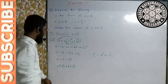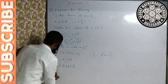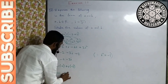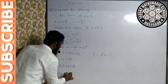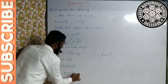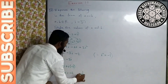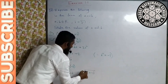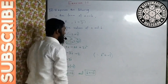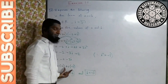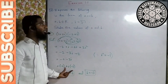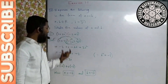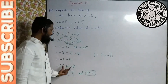Yahan compare karke ham a nikalte hain: a ki value hai minus 4, aur b imaginary part hai minus 3. Therefore a is equal to minus 4 and b is equal to minus 3. Toh a plus ib ke form mein express kar diya, aur a aur b find kar liye.